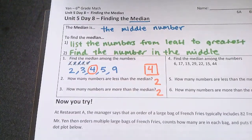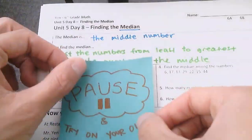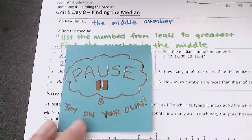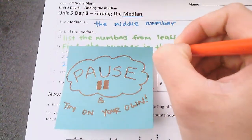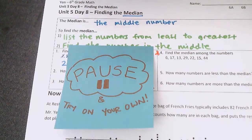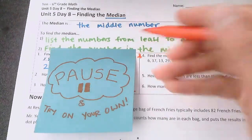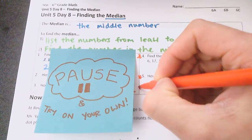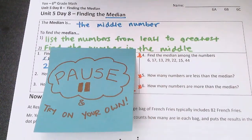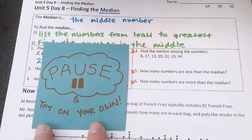Alright. Now that we've done this one together, what I want you to do is to pause and try number 4, 5, and 6, these three. When you're done with these three, resume the video and then you can check your work. So pausing and trying those.